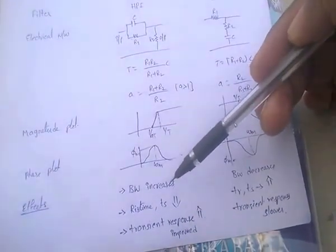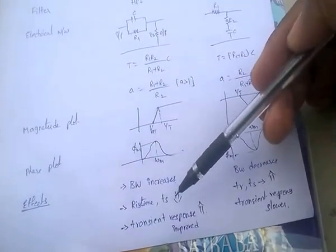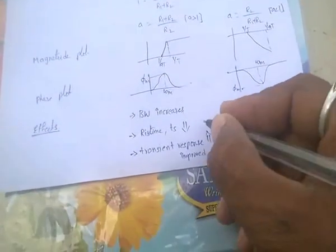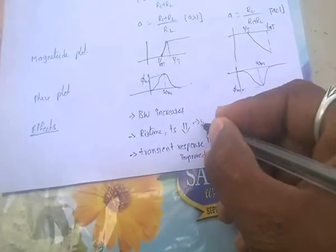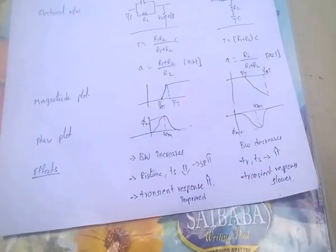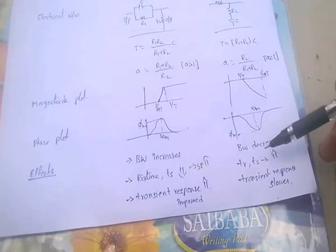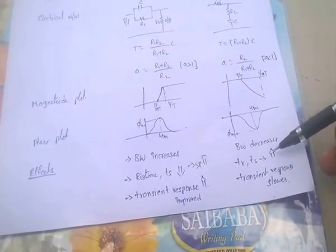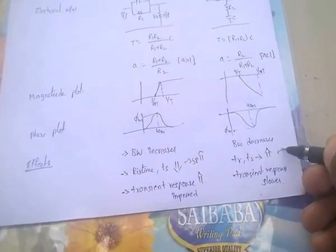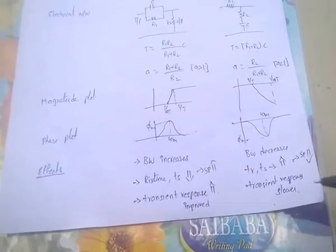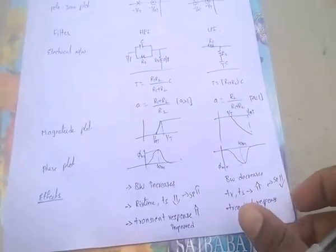In the case of the lead controller, bandwidth increases, so time decreases and speed increases, meaning the transient response is improved. For the lag controller, bandwidth decreases, time increases, speed decreases — the transient response is slower.